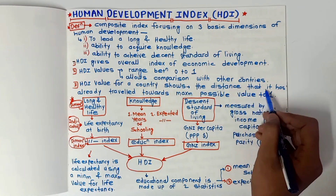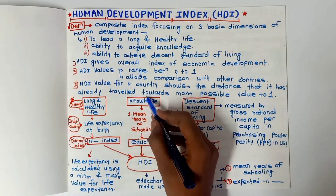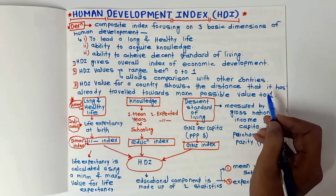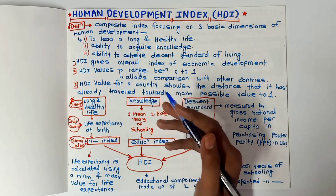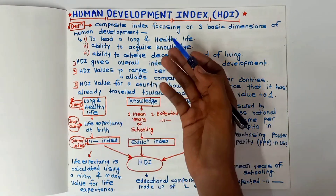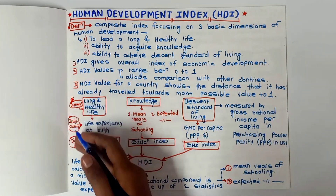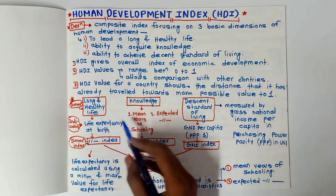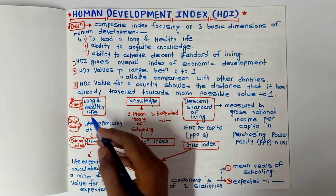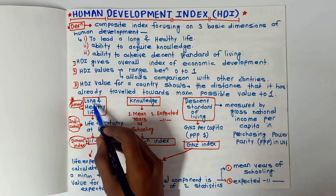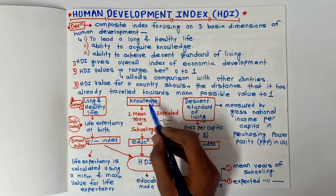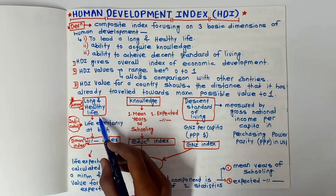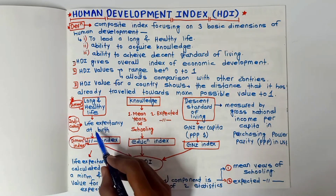So the HDI value represents the distance a country has already traveled towards the maximum possible value of one. Now, what are the indicators of the Human Development Index? I have covered this in a diagram — you have to draw this diagram as it is in your exams. The dimensions are: long and healthy life, knowledge, and decent standard of living. The indicator for long and healthy life is life expectancy at birth.